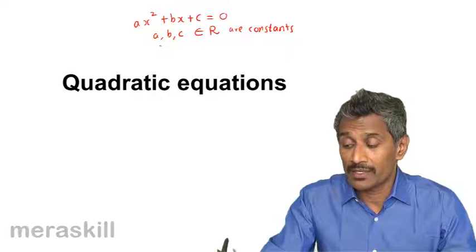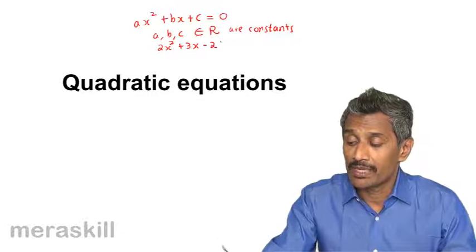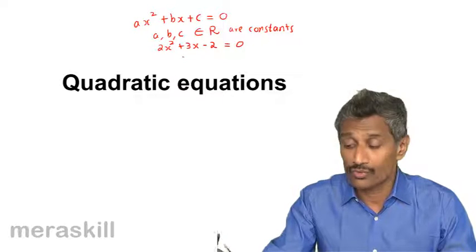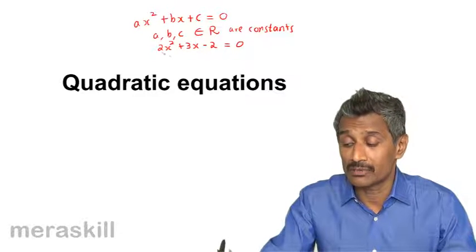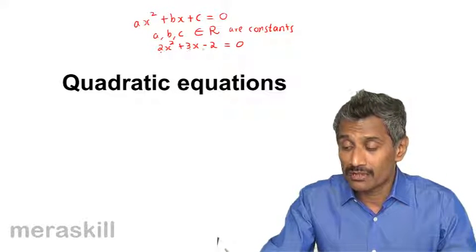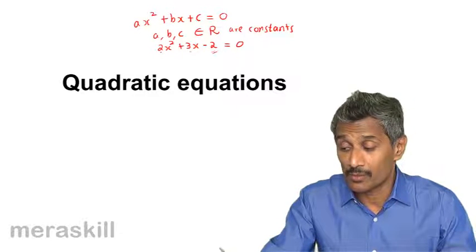Take an example: 2X squared plus 3X minus 2 is equal to 0. This is a simple quadratic equation where A is 2, B is 3, and C is minus 2.